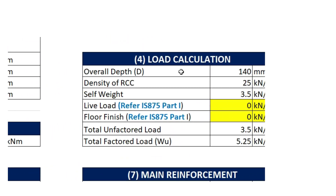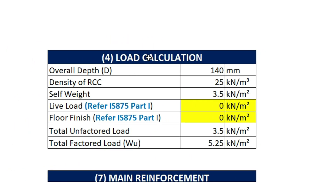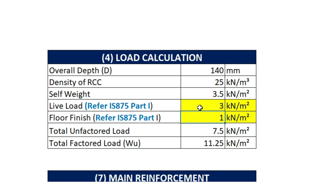Moving to the fourth step, in which we need to calculate the load on the slab. The overall depth of the slab is 140 mm and the density of RCC is 25 kN per meter cube. The self weight of the slab is automatically calculated as 3.5 kN per meter square. Let's assume the live load on the slab equal to 3 kN per meter square and floor finish 1 kN per meter square, derived from IS 875 Part 1. The total unfactored load will be 7.5 kN per meter square and the total factored load will be 11.25.